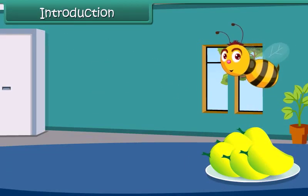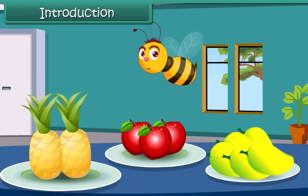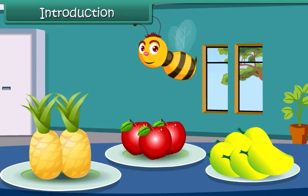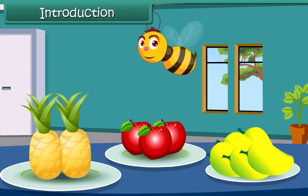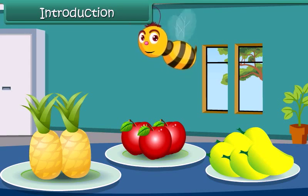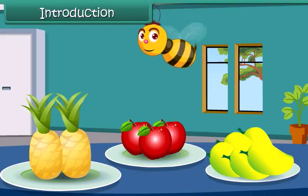Hello friends, here you see some fruits are kept on the table. We have 5 mangoes, 3 apples and 2 pineapples. Describing in this manner is called data representation.